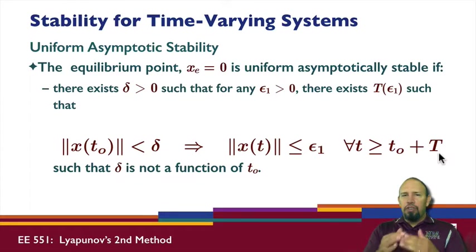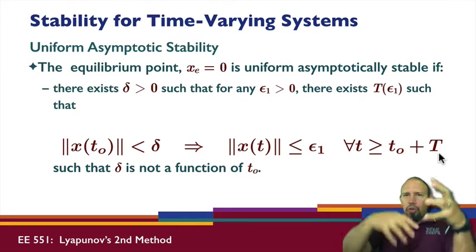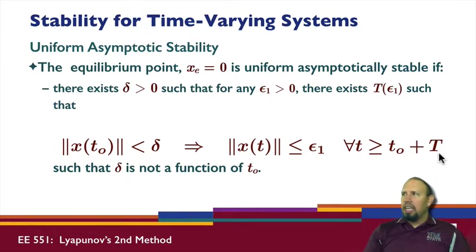That is, after a certain point, it may do a lot of stuff, but after a certain point it will be within this ball. There is a time at which this occurs. So this is what's called uniform asymptotic stability.